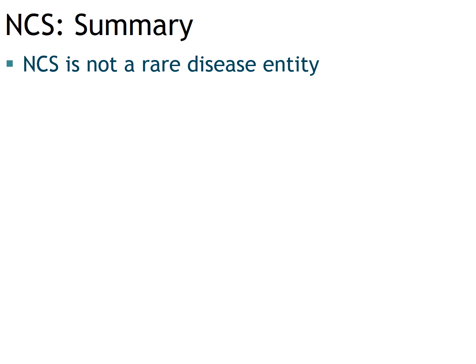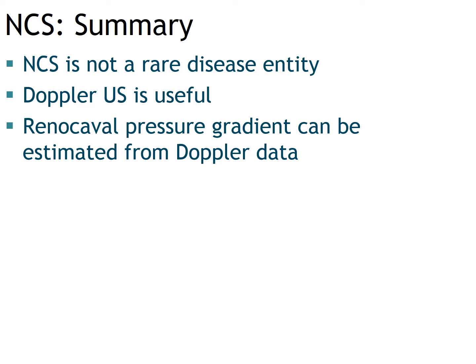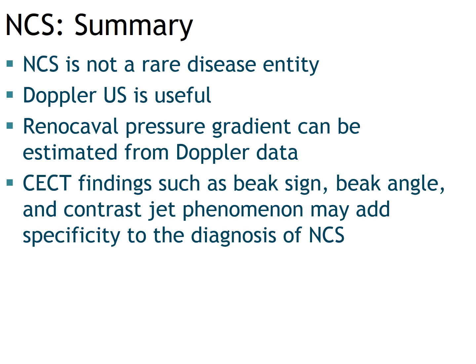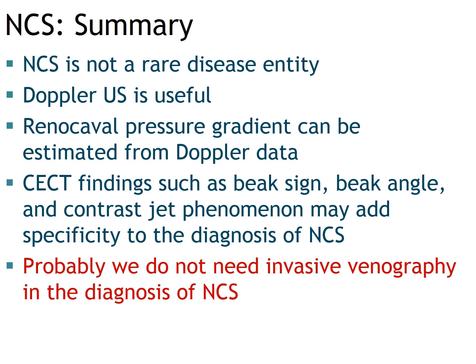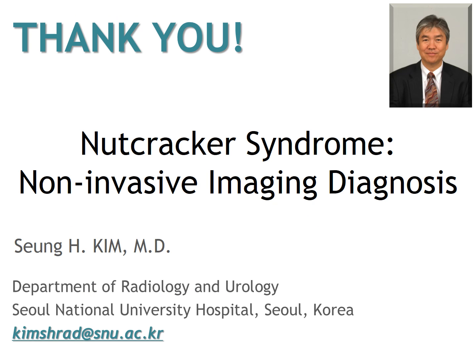To finish, nutcracker syndrome is not a rare disease entity. Doppler ultrasound is useful, and renal caval pressure gradient can be estimated from Doppler data. Contrast-enhanced CT findings such as beak sign, beak angle, and contrast jet phenomenon may add specificity to the diagnosis of nutcracker syndrome. Probably we can make a diagnosis of nutcracker syndrome on the basis of Doppler ultrasound and CT findings without performing invasive venography with pressure gradient measurement. Thank you for joining this session; please email me if you have any questions.